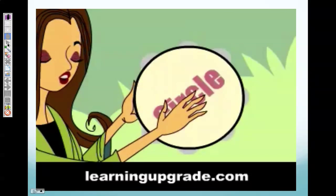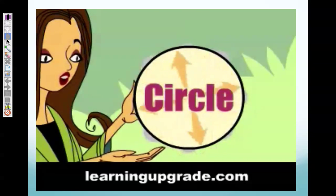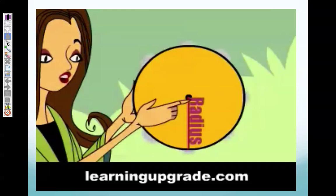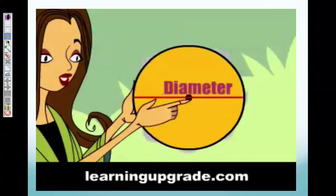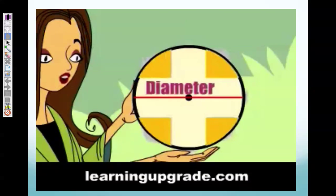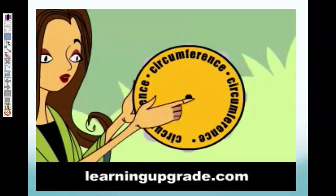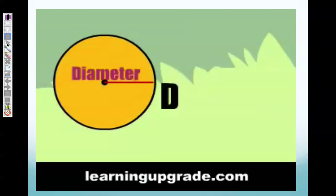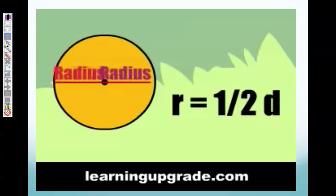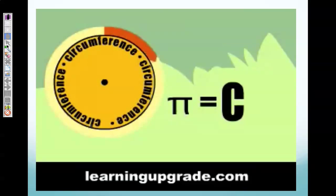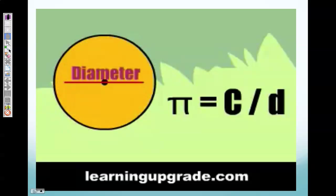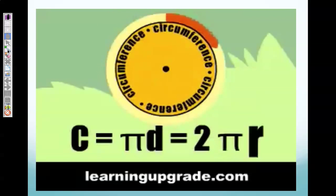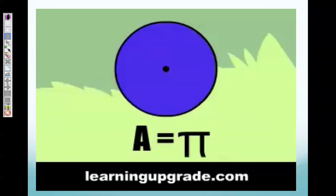A circle is a shape with all points on the circle the same distance from the center point. A radius is a straight line from the center to the circle's edge. A diameter is a line across the endpoints of a circle that passes through the center point. A circumference is the distance around the circle. Diameter d is twice the radius; radius r is half the diameter. Pi is circumference c divided by the diameter. Pi is approximately 3.14; circumference is πd or 2πr; area is πr².